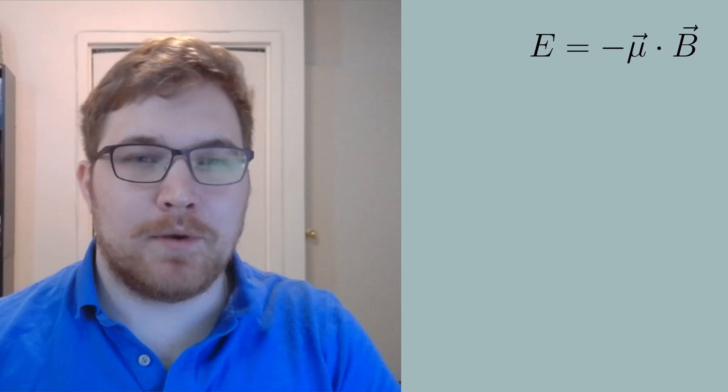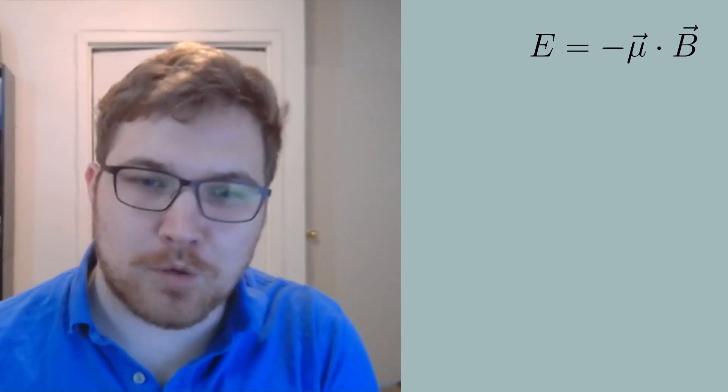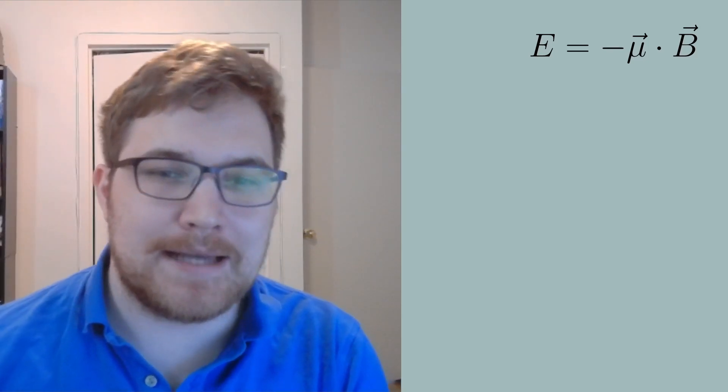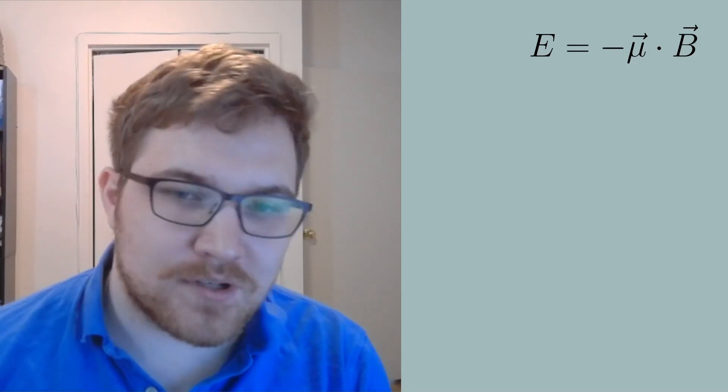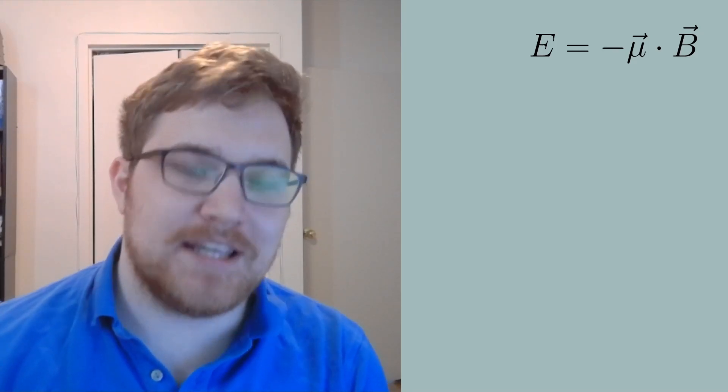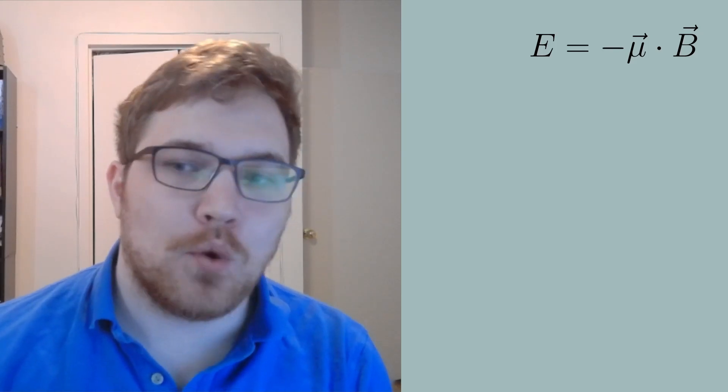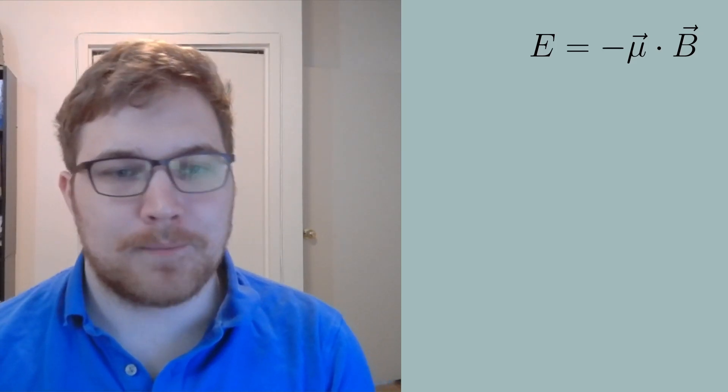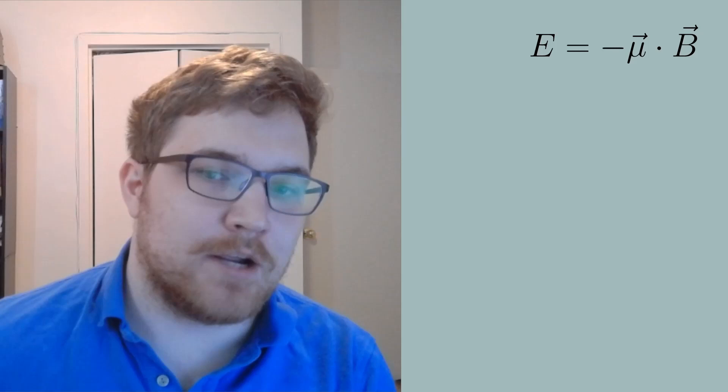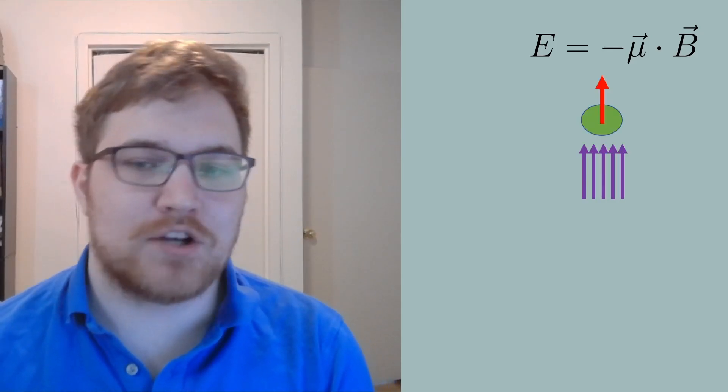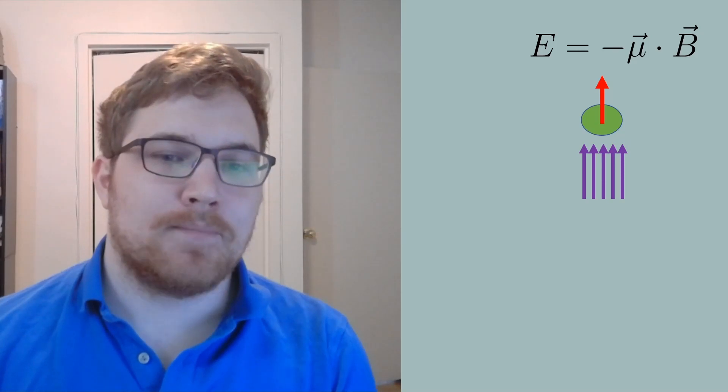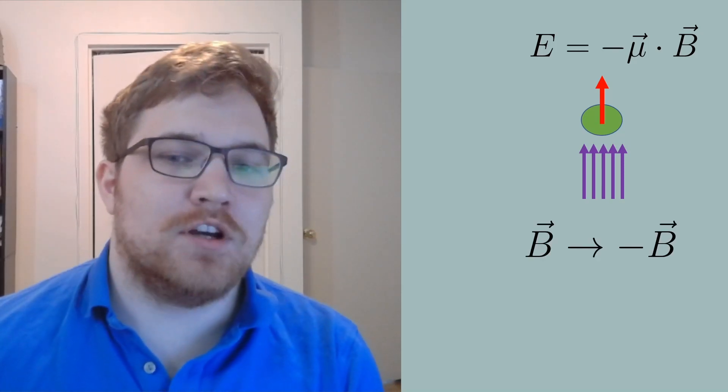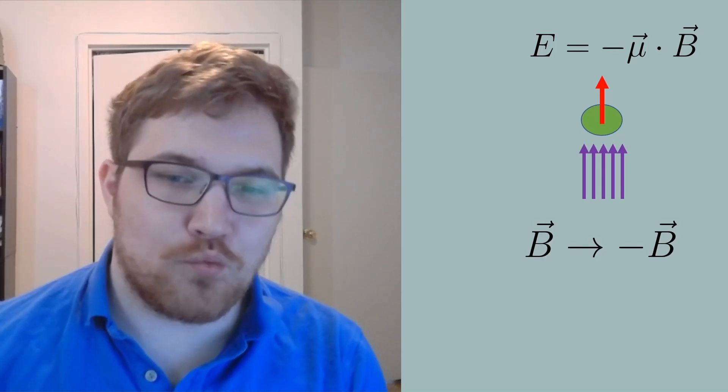This simple experiment works as follows. First, we prepare our lithium fluoride at a low temperature in a strong magnetic field. This allows us to write the energy effectively as the interaction of the field with the magnetic moment. Each proton's magnetic moment is then in the direction of the magnetic field, or at least most of them are. We then reverse the direction of the magnetic field very rapidly.